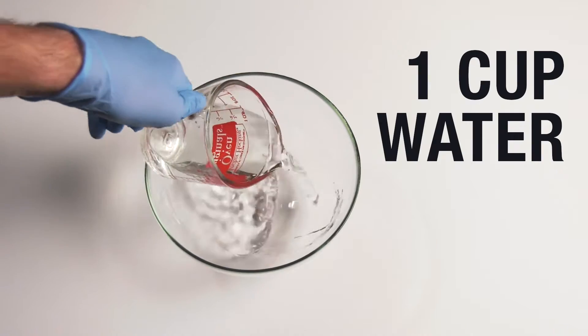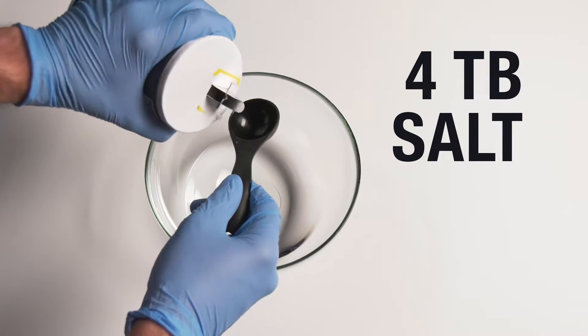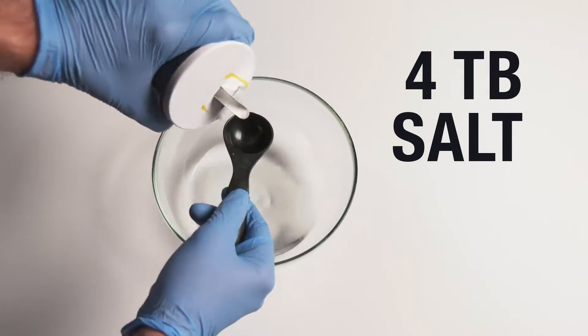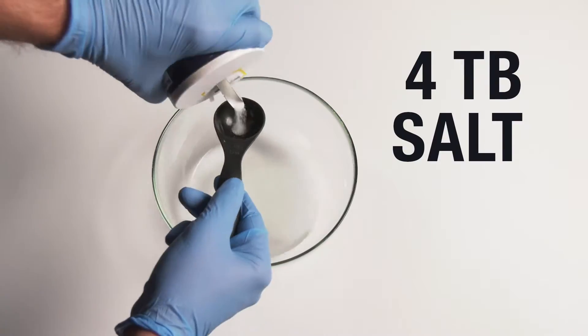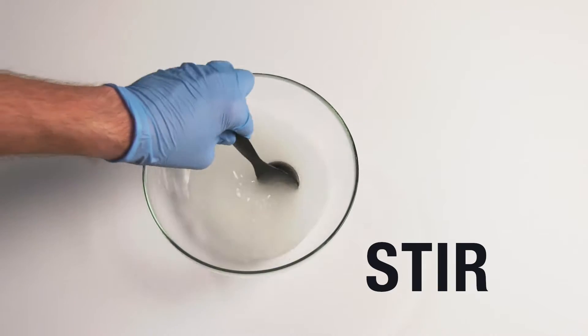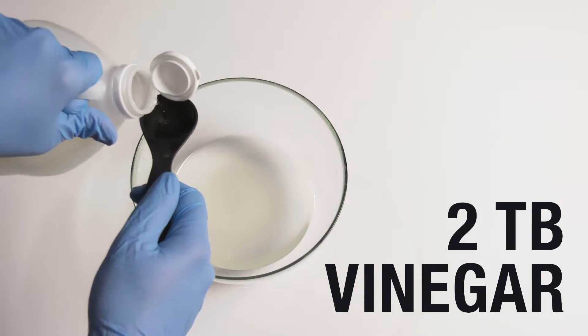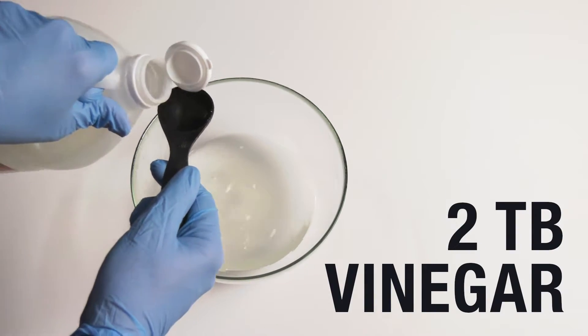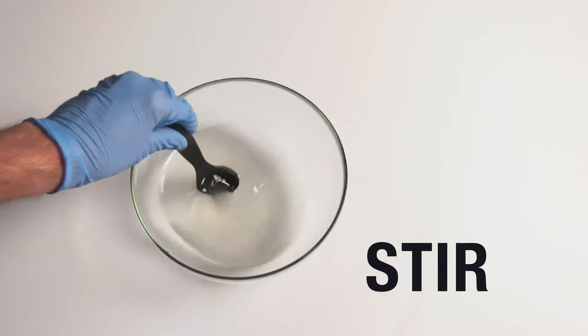Fill a plastic mixing cup with a cup of water. Add four tablespoons of salt and stir until dissolved. Add two tablespoons of vinegar and then stir until well mixed.